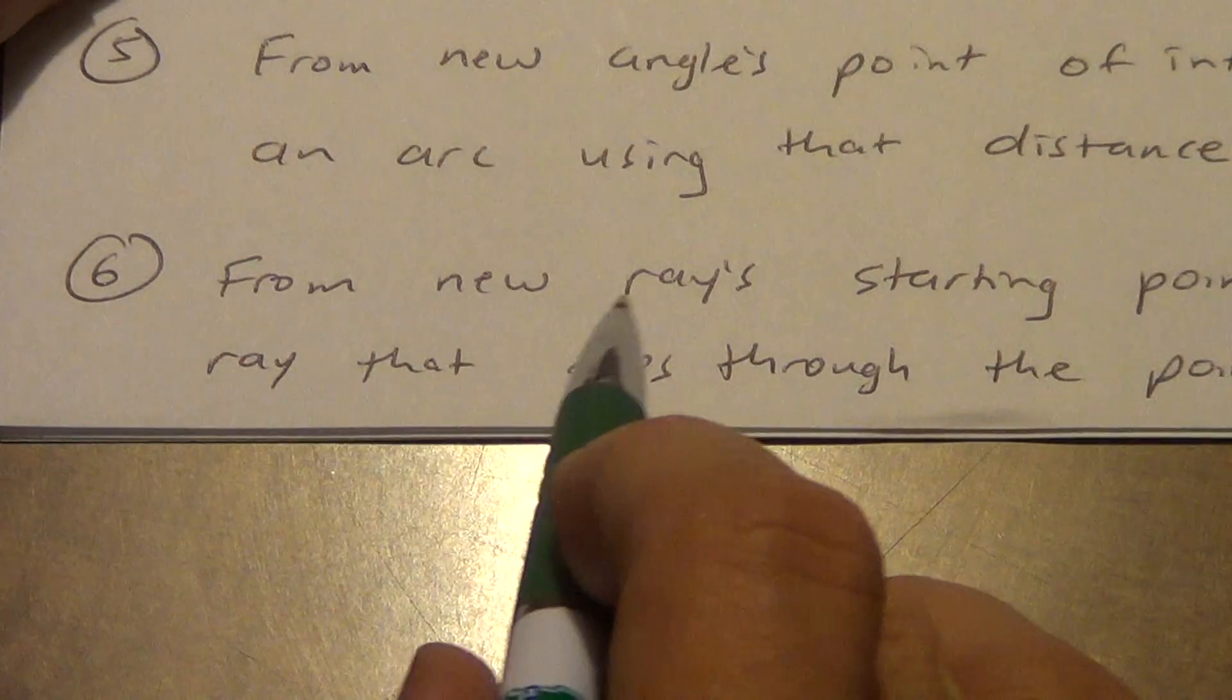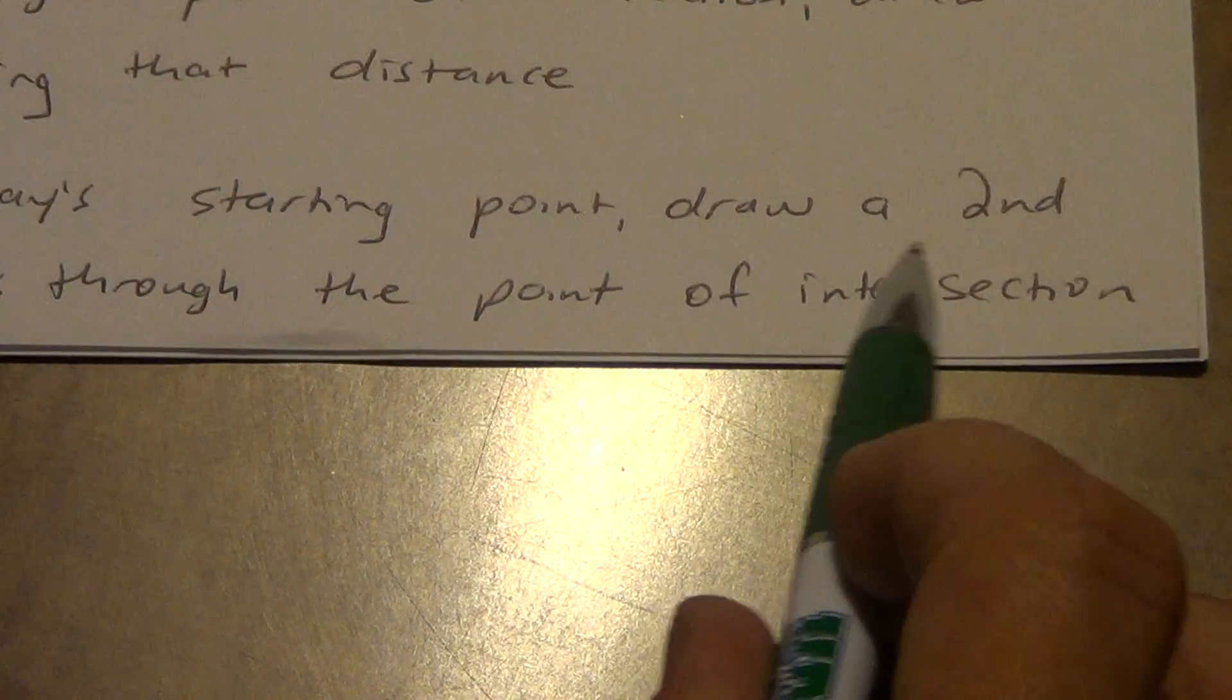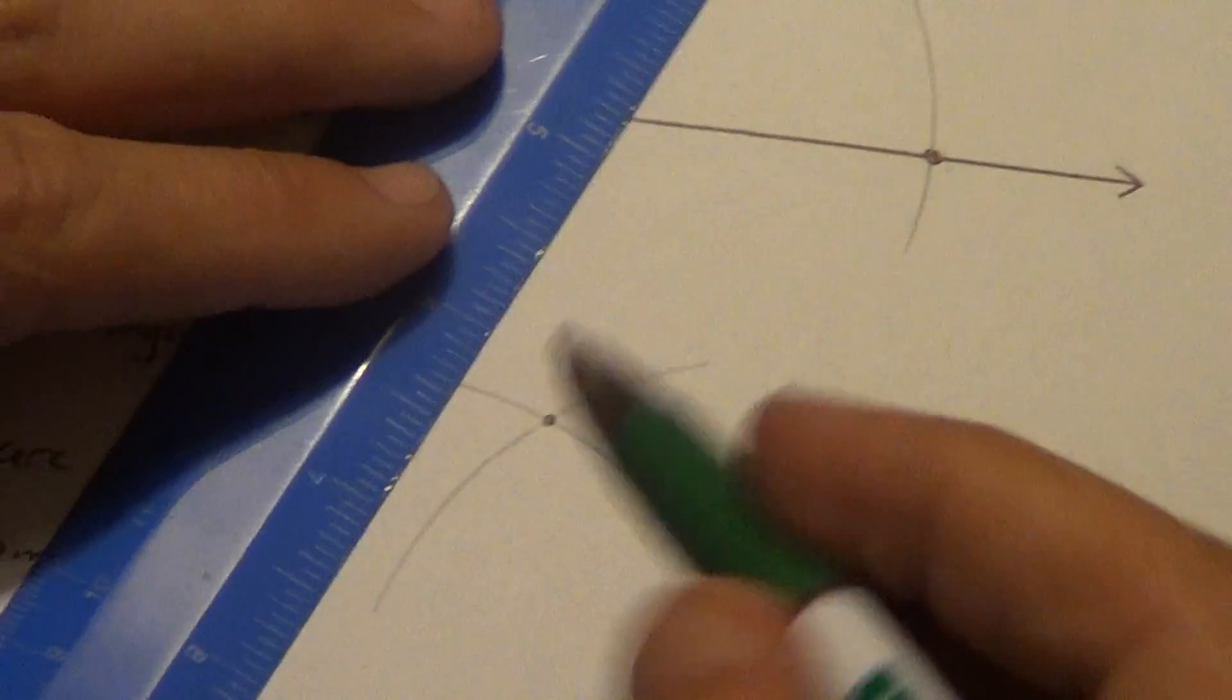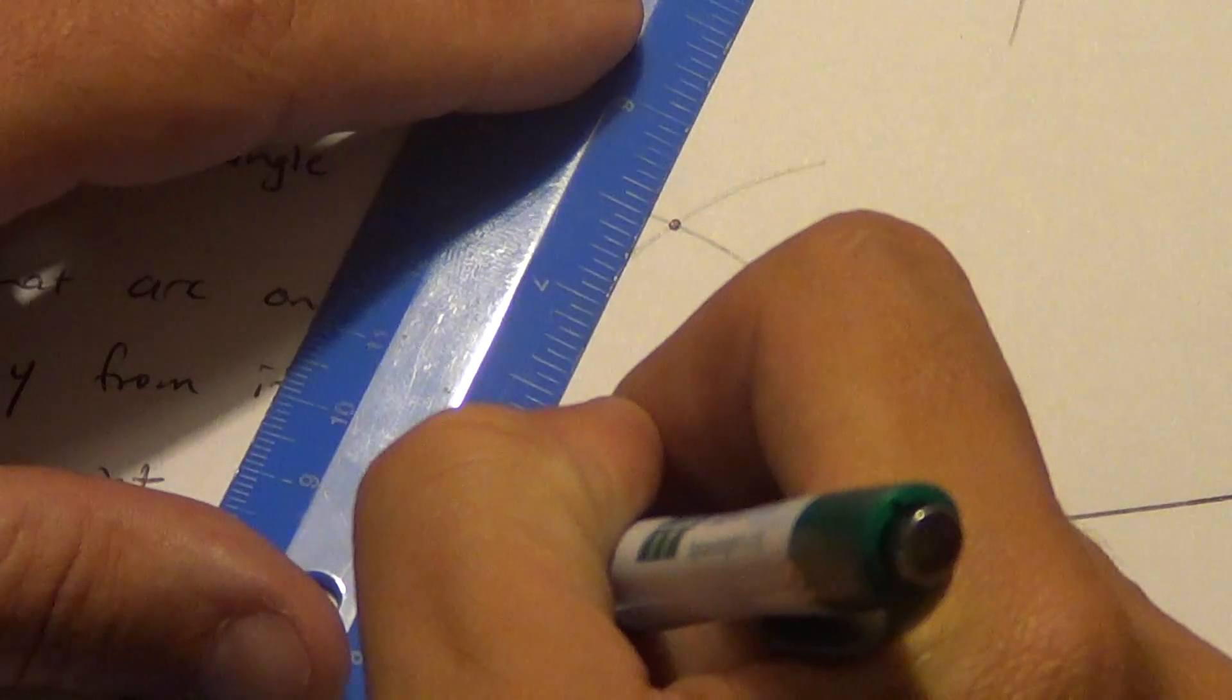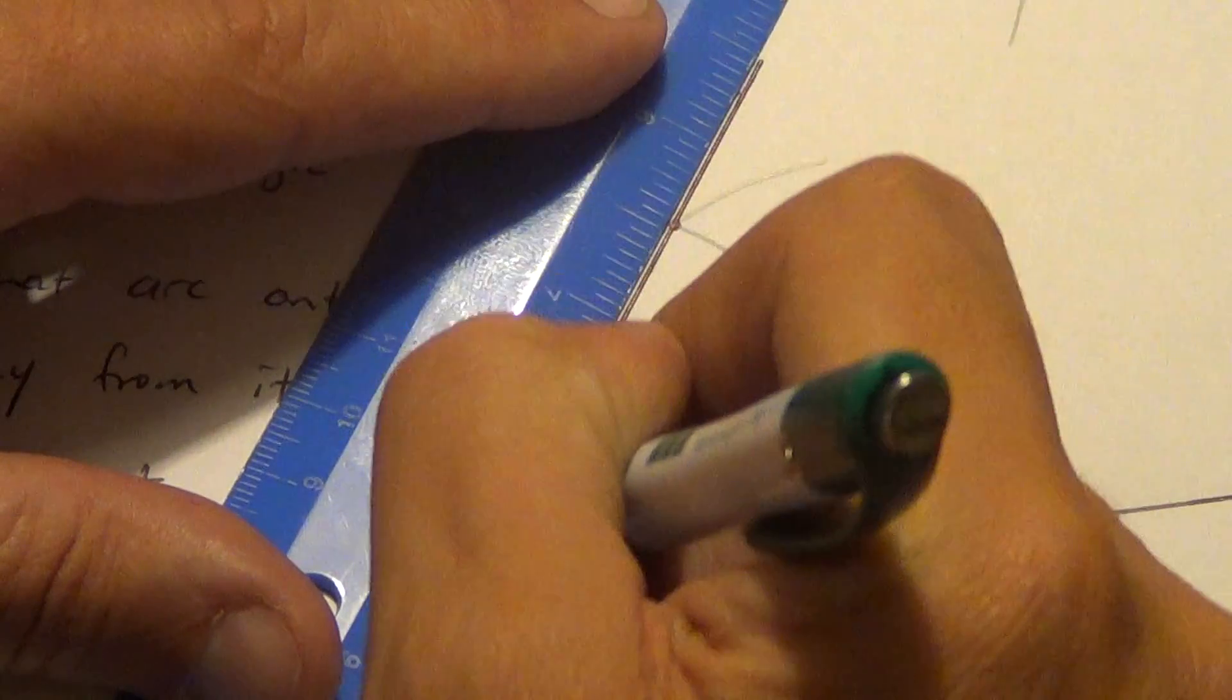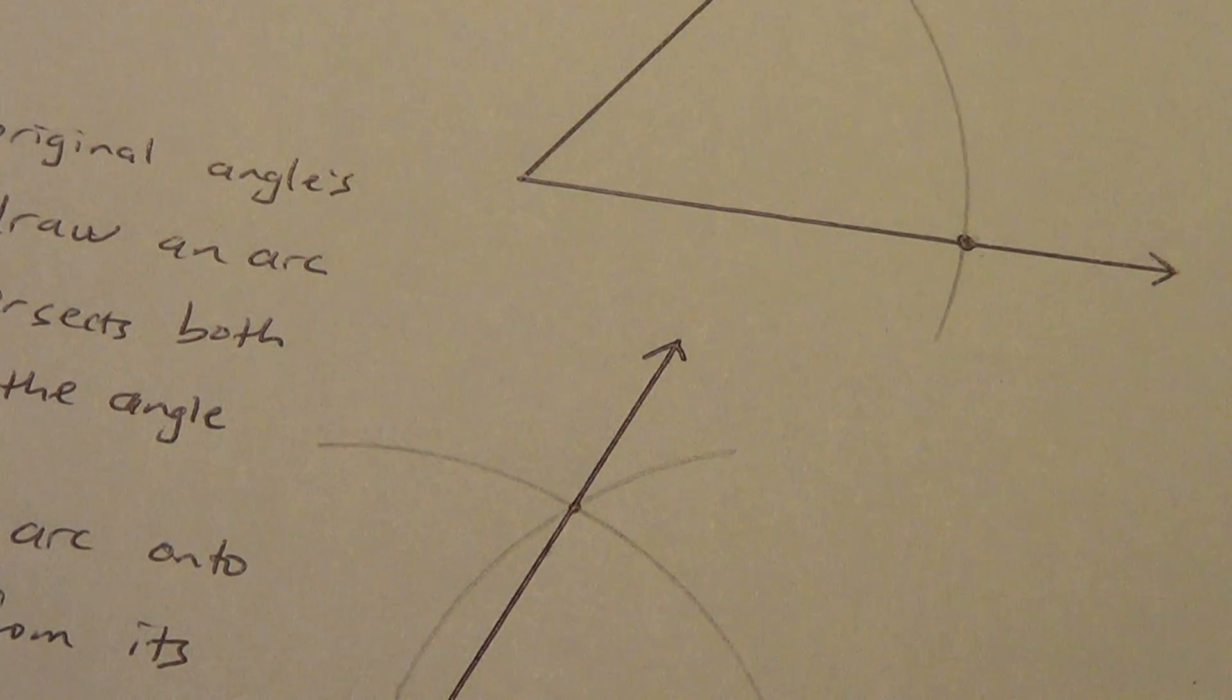Lastly, step six. From that new ray's starting point—remember, this is the new ray, there's its starting point—from the new ray's starting point, draw a second ray that goes through the point of intersection, the point of intersection you just created. So take my straight edge, I'll line that up right there with the new ray's starting point and that point of intersection I just created. And I'm going to draw that. Make sure, remember, angles are made up of rays, so I'm going to get that ray on the end of it. Now I'm going to zoom out just a little bit so we can kind of see both angles at the same time.